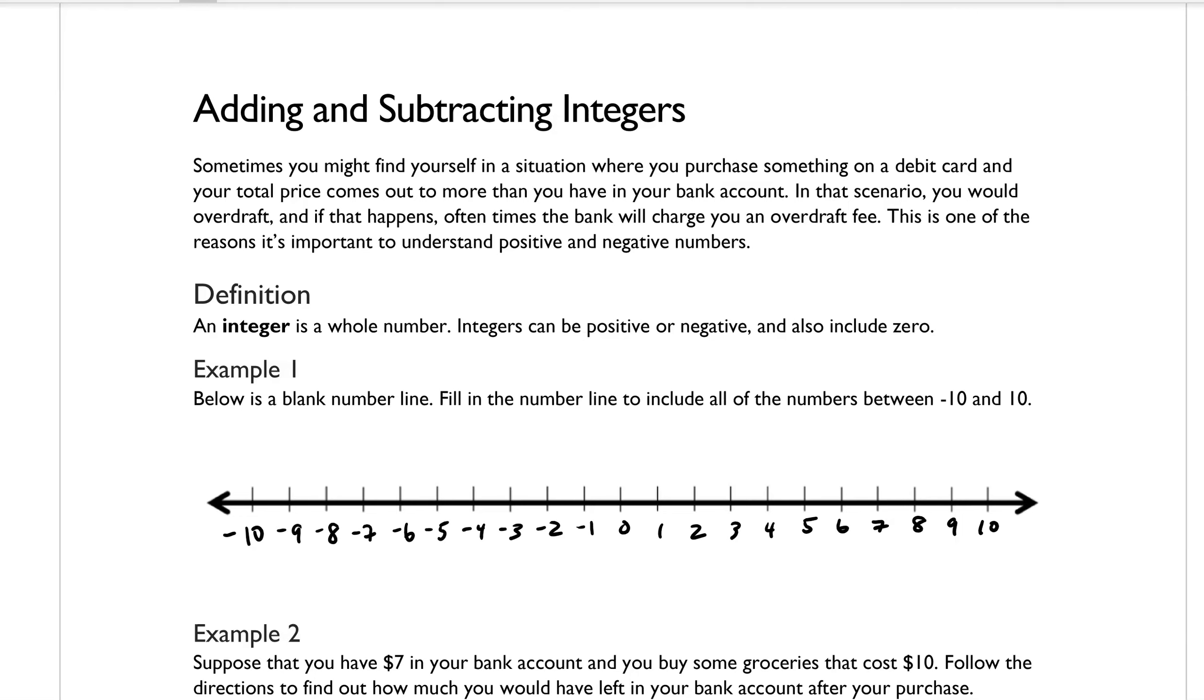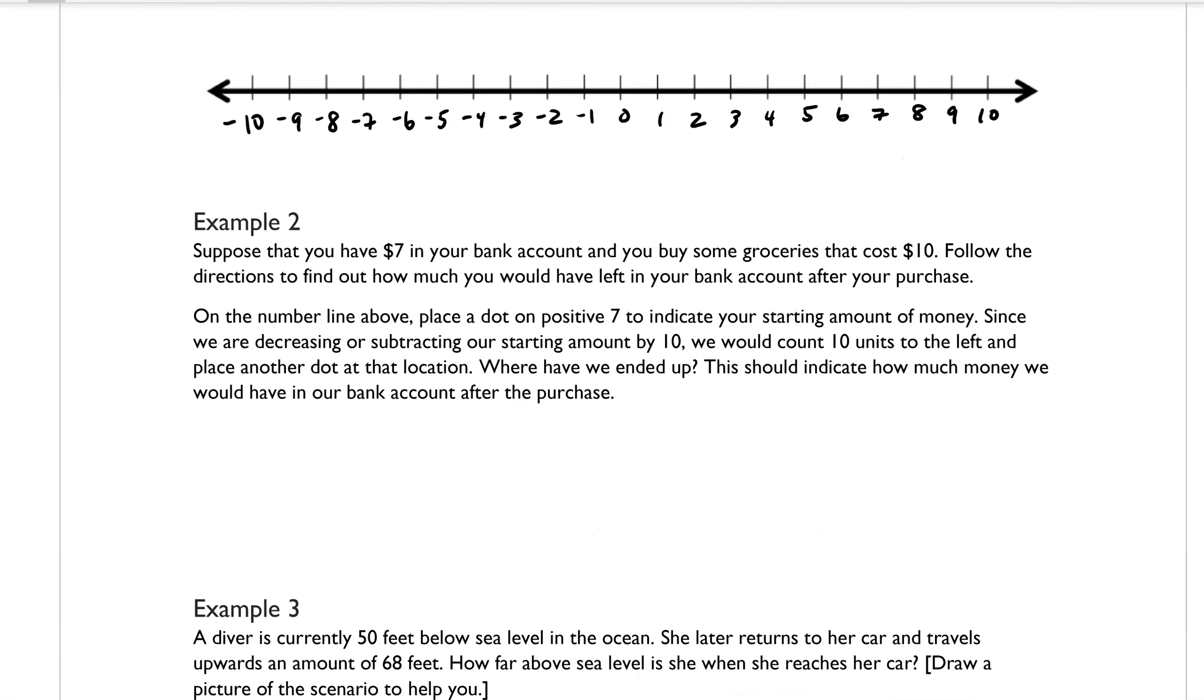Now let's look at example 2. Suppose that you have $7 in your bank account and you buy some groceries that cost $10. Follow the directions to find out how much you will have left in your bank account after your purchase. On the number line above, place a dot on positive 7 to indicate your starting amount of money. So I'm going to change my color here. I'll use a green dot and I'm going to put a dot here at positive 7.